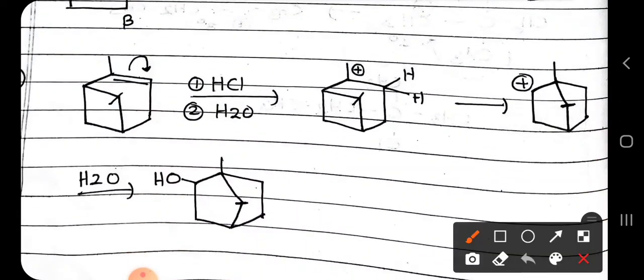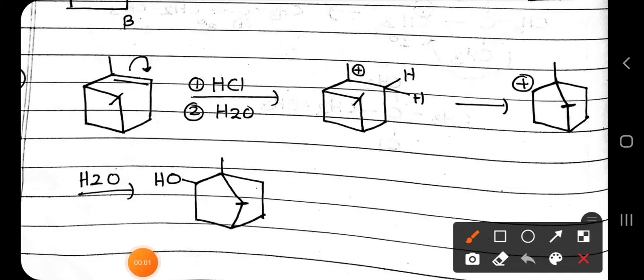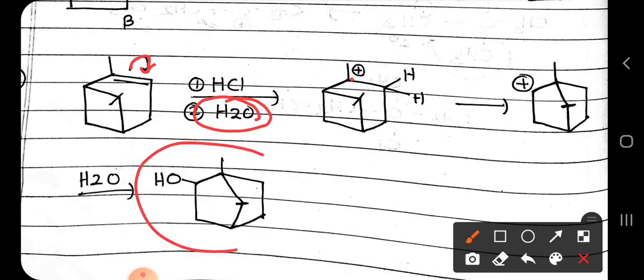Now similarly, here is another example where an alkene is the source of carbocation generation. This bond will shift, forming a carbocation. Then the alpha-beta bond will break. After that, water, which is present as a nucleophile in the system, will attack and we will get the product. You can try to work out the mechanism of this reaction on your own.